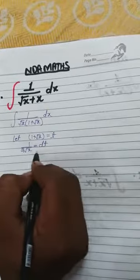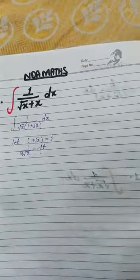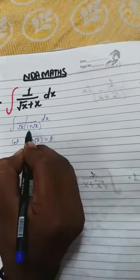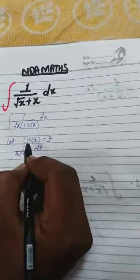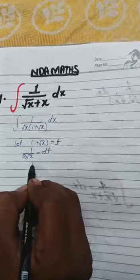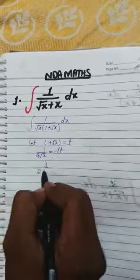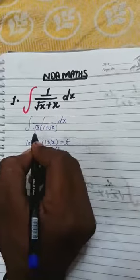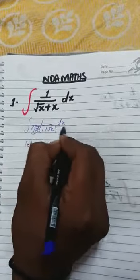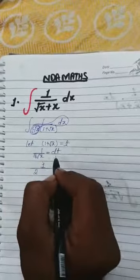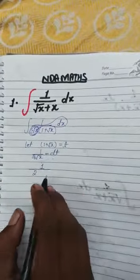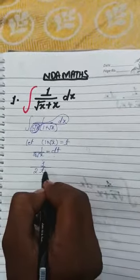dt. Put this value in the first equation. We can write it here, one upon two under root, this is equal to dx, plus under root x is equal to t, so we can write it here.